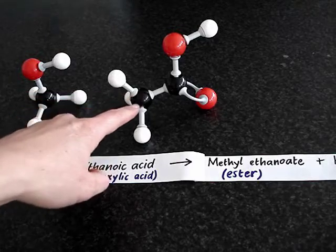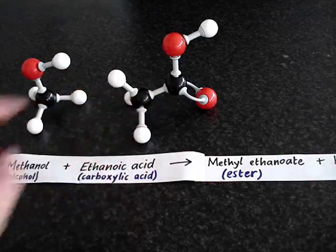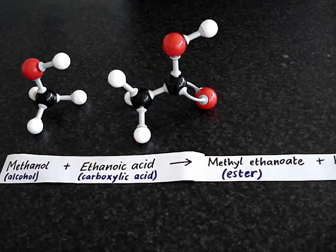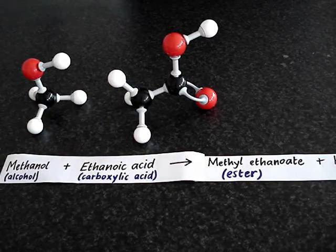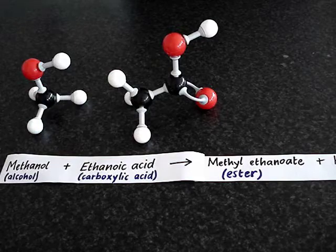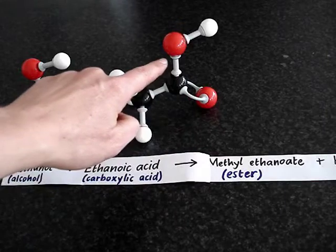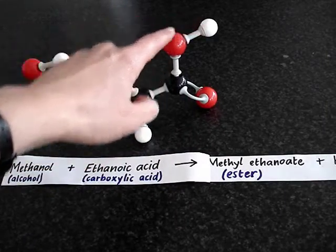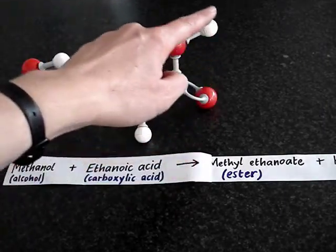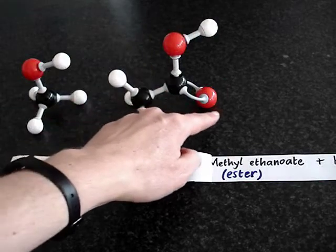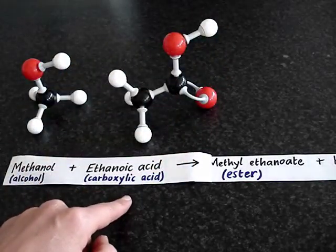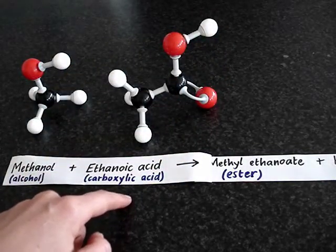And we have ethanoic acid, two carbons. That's why we use the prefix eth. We see the carboxyl functional group characteristic of carboxylic acids, the double bond between carbon and oxygen, and then the hydroxyl group as well. So that all together is the COOH carboxyl functional group of carboxylic acids. And this is ethanoic acid.